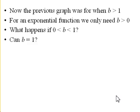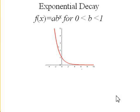Can b be 1? Well, if b is actually equal to 1, then we're repeatedly multiplying by 1 and we just have a constant function. But let's talk about the case where it's between 0 and 1.